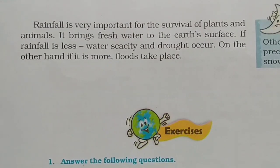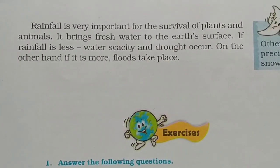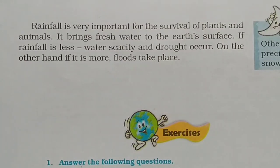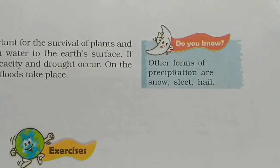Rainfall is very important for the survival of plants and animals as it brings fresh water to the earth's surface. If rainfall is less, water scarcity and drought occur. On the other hand, if it is more, floods take place. अगर पानी की कमी होगी तो सूखा होगा, और अगर ज़्यादा हो जाएगा तो बाढ़ आएगी।